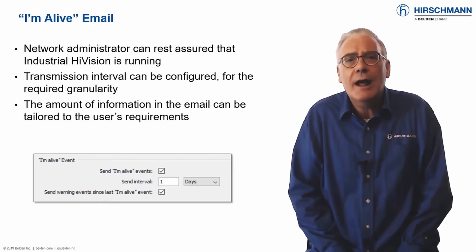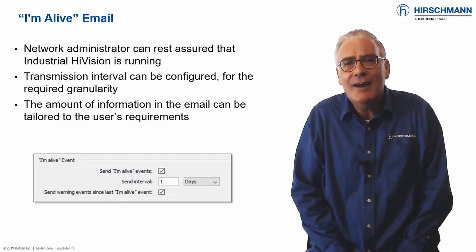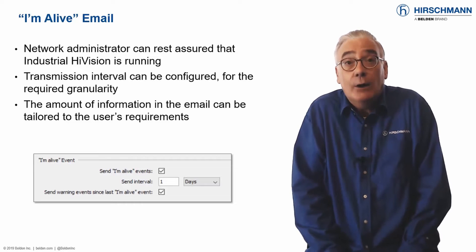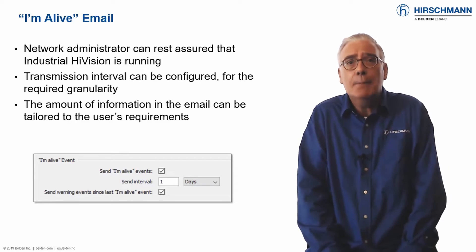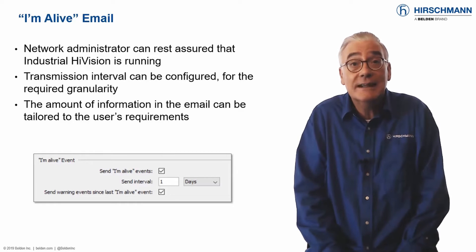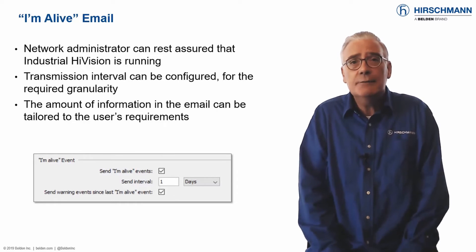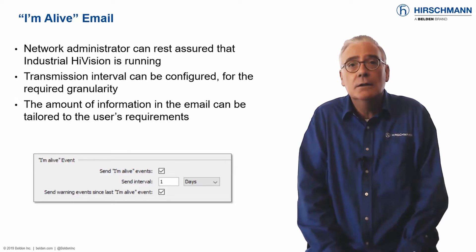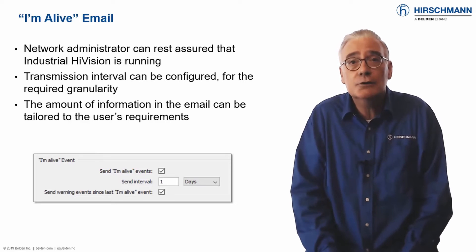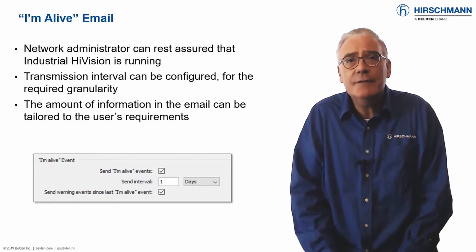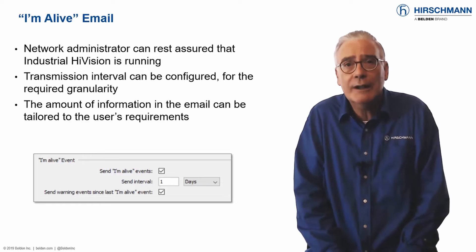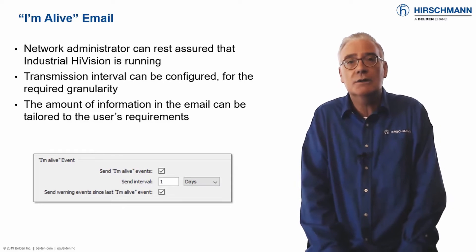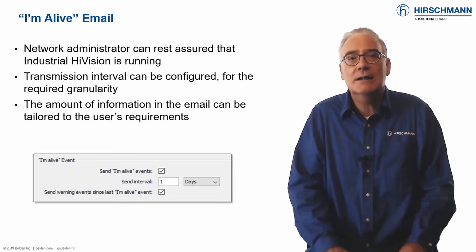With the reliability of today's hardware, it's very likely that Industrial HiVision will not have stopped. But how can you be sure, especially if the application is running on a remote PC? Just configure Industrial HiVision to send you an I'm Alive email. You can configure the sending interval to avoid email overload, and you can even receive the latest warning events in the email. You decide which information you want and when you want it — no more uncertainty.